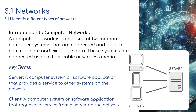A computer network comprises two or more computer systems that are connected and able to communicate and exchange data. These systems are connected using either cable or wireless media. The first term we're going to learn is a server — a computer system or software application that provides a service to other systems on a network. A client is a computer system or software application that requests a service from a server on the network.